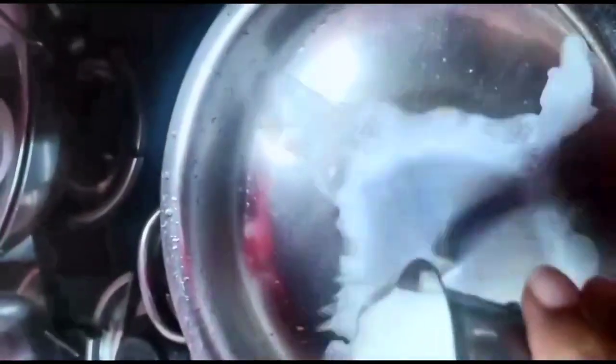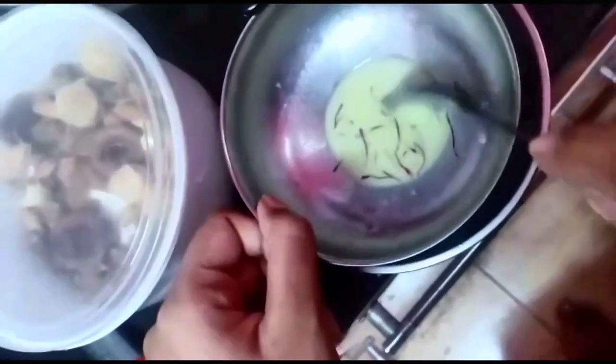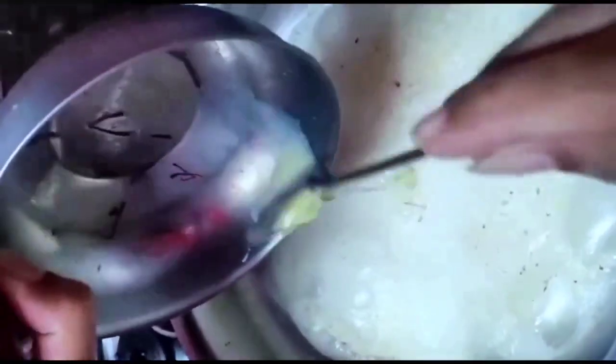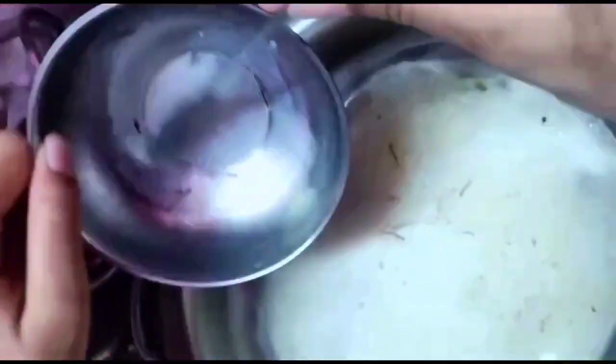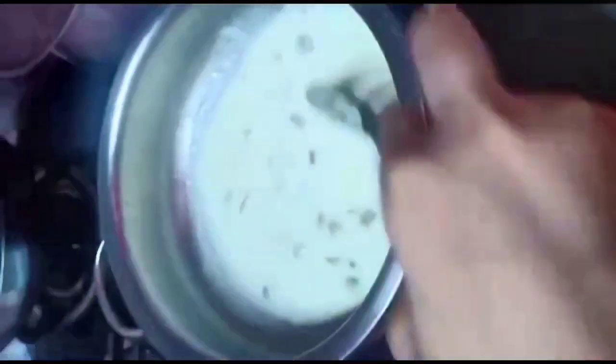Next, to prepare malai, add one and a half glass of milk in the bowl. Add elaichi in the milk, add the dry fruits in the milk. Now soak the kesar in the milk and transfer it in the bowl where you are boiling.